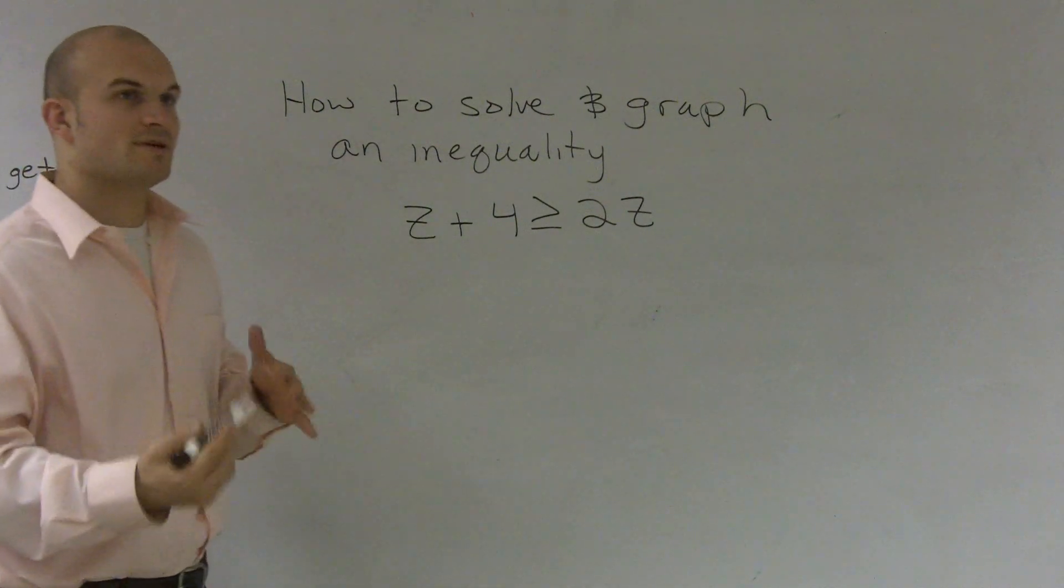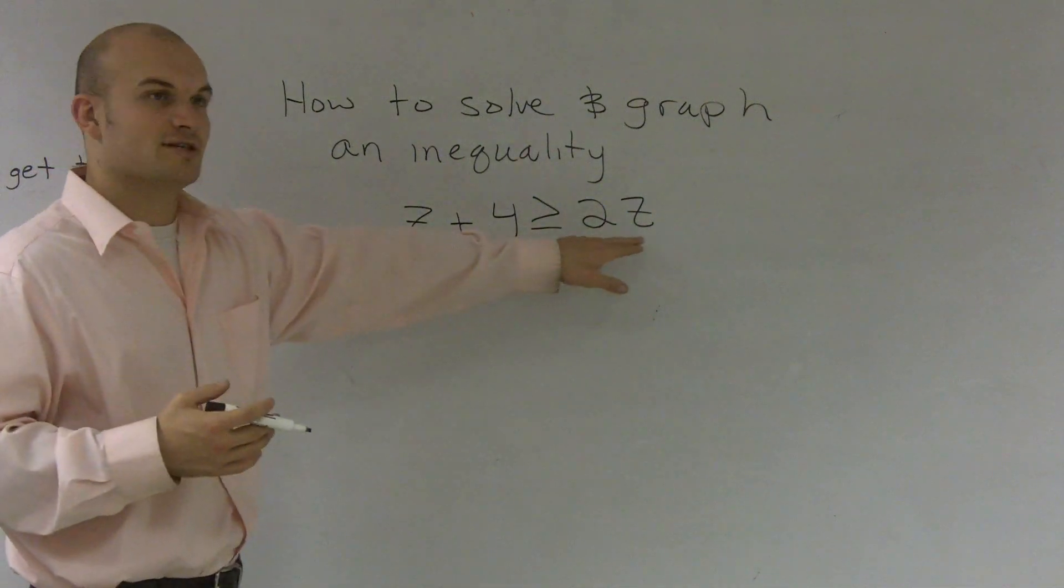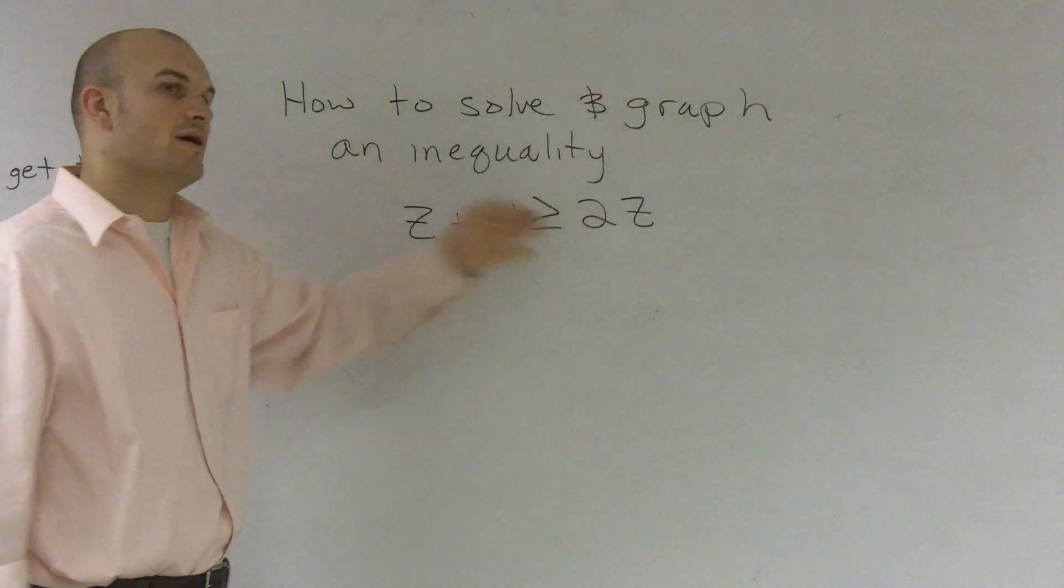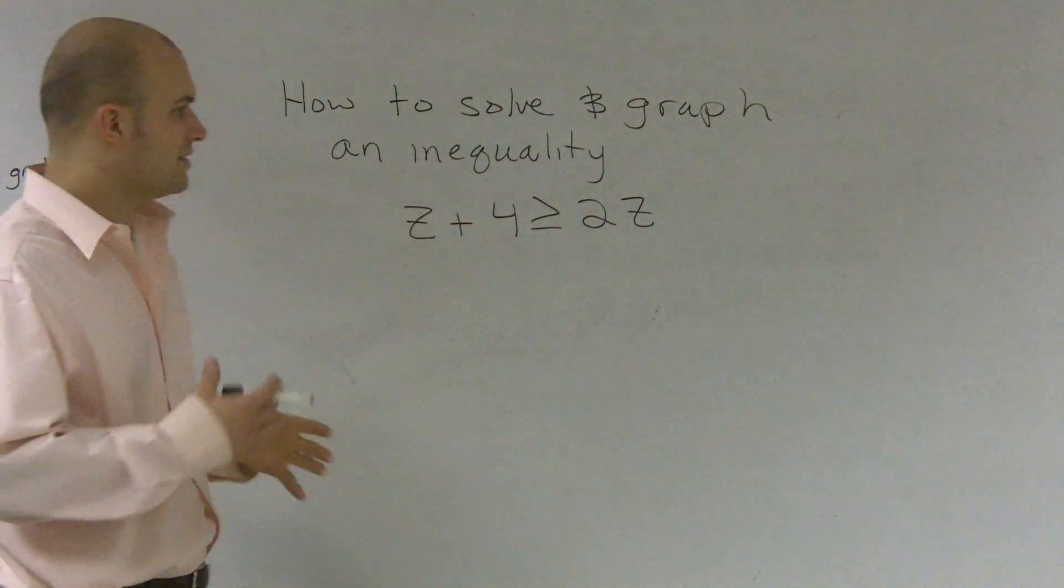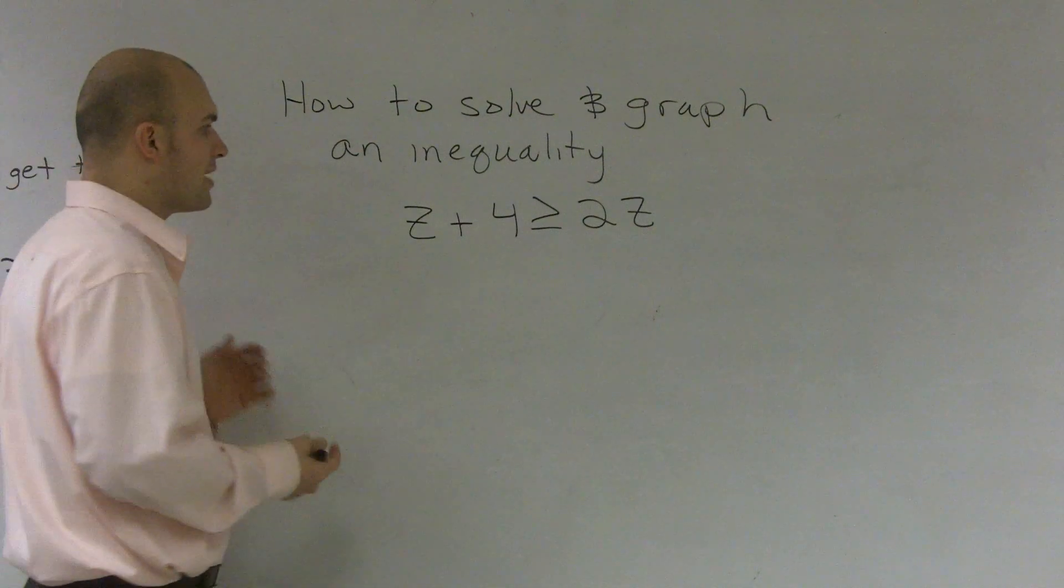What we're going to do is I'm going to decide which side do I want to get my variable alone on. I could subtract this 2z to get rid of the 2z on the right side, but then I'd be left with 0 and I'd have to bring the 4 over there. Even though it's possible, it's really not probably the most efficient way to solve the problem.